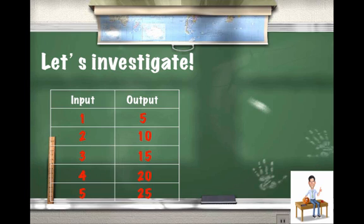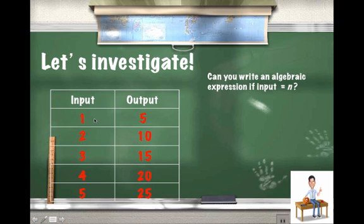If I were to continue down with the input numbers, if I continued going lower and lower, say this wasn't a 5, but this was a 20, it would be difficult and a waste of time just to keep counting up by 5, so we have to find out how we got from each input to output. The question was, can you write an algebraic expression if input equals n? And we discovered that for each input number, if we put the input number in the place of n, we would get our output number.